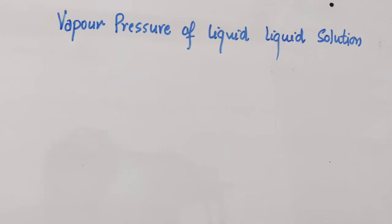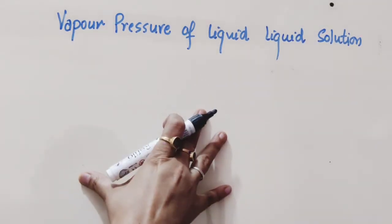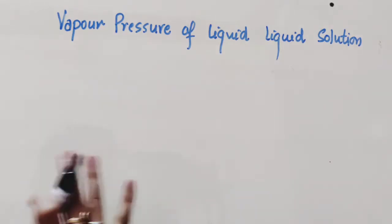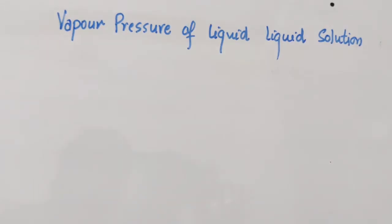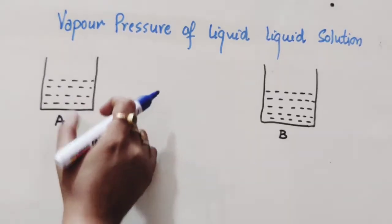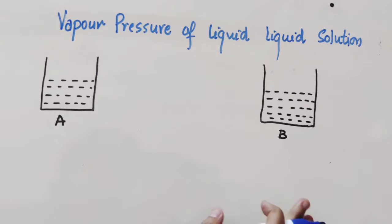In this video we will discuss one of the important concepts of the solution chapter: vapor pressure of liquid-liquid solutions. If there are two liquids A and B, both are volatile, that is both can easily form vapors.